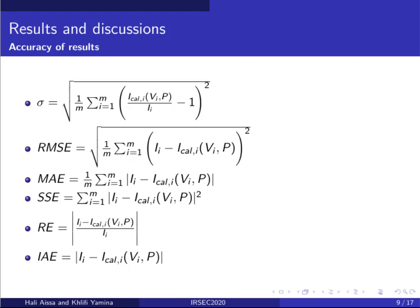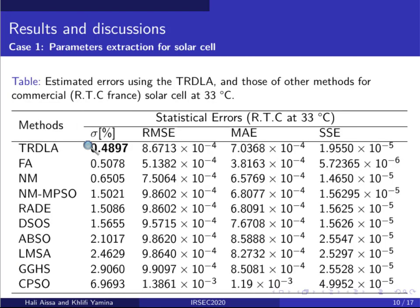In order to confirm the accuracy of the extracted parameter values, statistical error is used in this analysis. The minimal value of the statistical error indicates the identified parameters are close to the real ones.